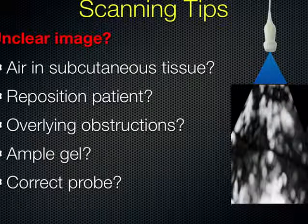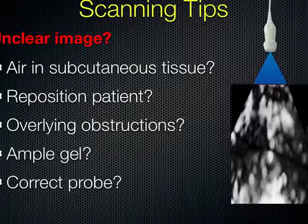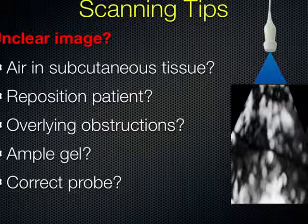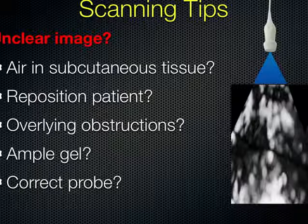When you're having difficulty obtaining an image of the lungs, it's often frustrating. The lungs themselves are fairly impossible to see in a normally aerated lung because air scatters ultrasound waves. Other things that can interfere with the picture include subcutaneous emphysema, poor patient positioning, overlying obstructions such as EKG pads and monitor clips, and insufficient gel causing air between the probe and skin. Also make sure you have the correct probe for the purpose of your scan.